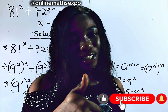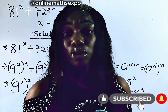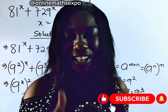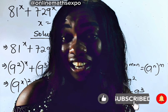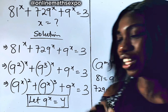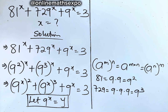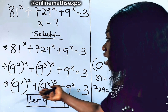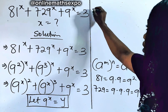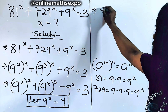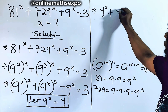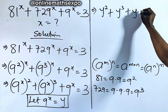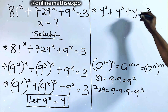If you are a returning viewer, thank you very much for choosing to learn with us. If you are new, hit that subscription button, and if you find this interesting, don't forget to give us a thumbs up. So replacing 9^x with y, we are going to have y squared plus y cubed plus y equal to 3.